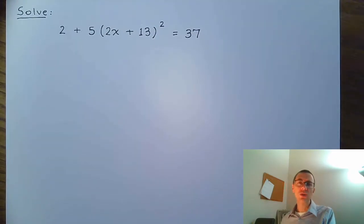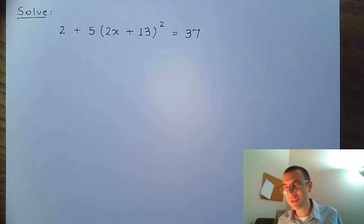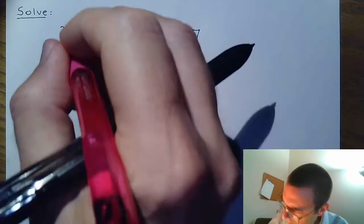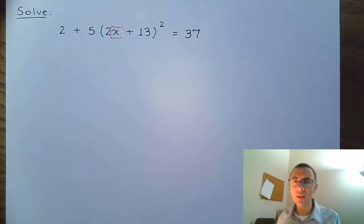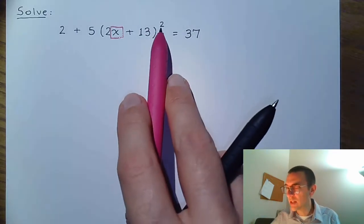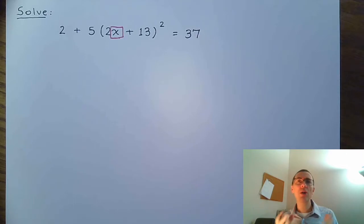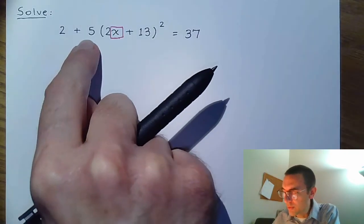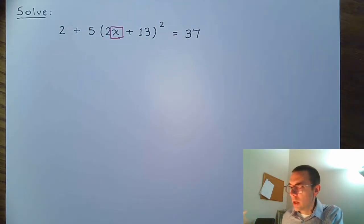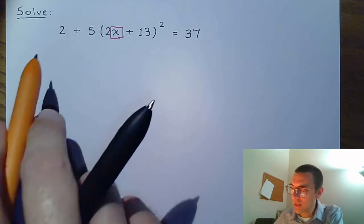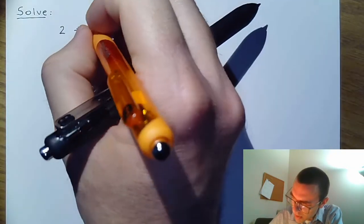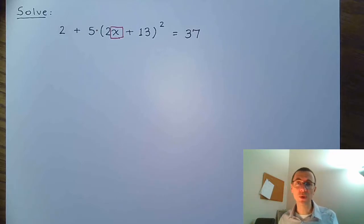The next equation is 2 plus 5 times the quantity 2x plus 13 squared equals 37. If we pay attention, we recognize there is only one instance of the variable, and it's stuck inside something that's squared — so this is great for using the square root property. But we can't use the square root property until we get the square by itself. We've got to get rid of the 2 and the 5. Be careful: 5 is connected to the parentheses through multiplication, so you can't just do 2 plus 5.